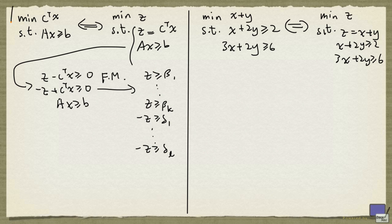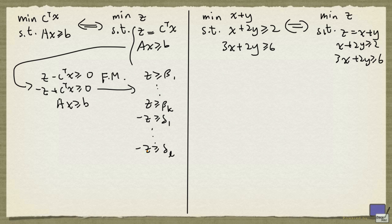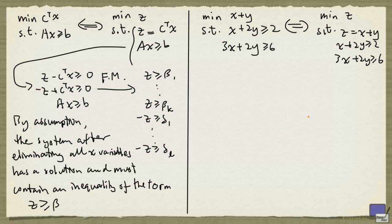Because we are assuming that this problem is not infeasible and not unbounded, first of all there must be a solution z to this system, and the other thing is we must have an inequality of this form — a lower bound on z.